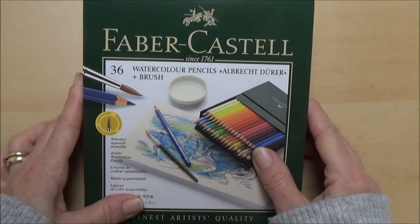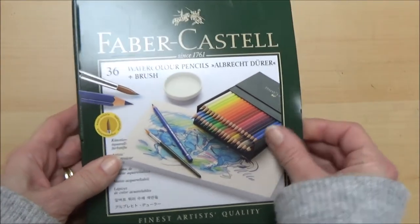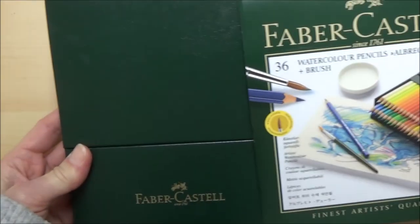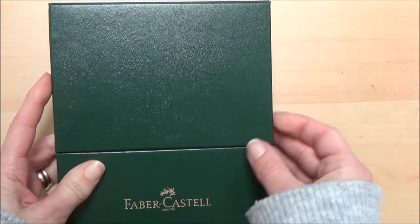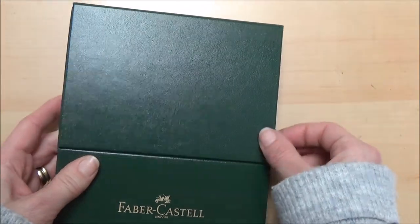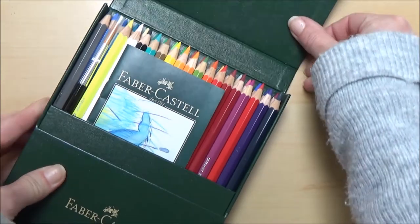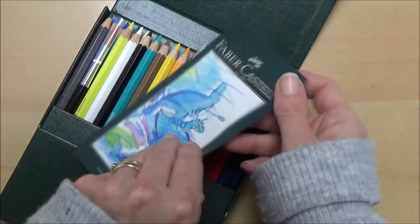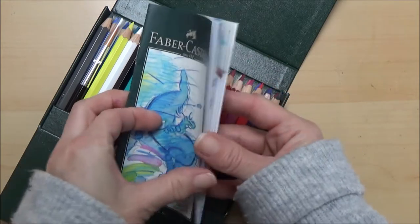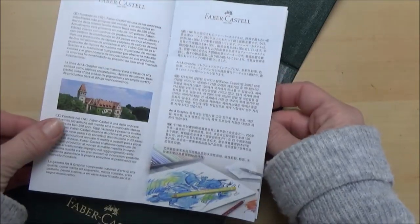The set I've got is the 36 set and this is a nice presentation case as well. It comes with a nice sleeve, a really good quality box with a magnetic closure so that's really nice to keep them all safe in. Inside as well as the pencils you also get this information leaflet which gives you information about the history of Albrecht Dürer as well as some tips and techniques to try.